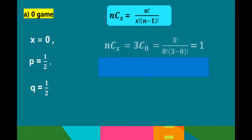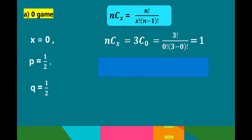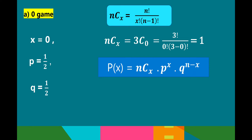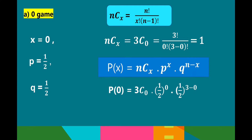For 0 games: x = 0. The combination of 3 at 0 is 3 factorial over 0 factorial times (3 minus 0) factorial, which equals 1. Using the binomial distribution: P(0) with combination at 0 equals 1, times (1/2) raised to 0 equals 1, times (1/2) raised to (3 minus 0), so (1/2) cubed equals 1/8. Multiplying gives 1 over 8.